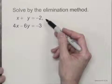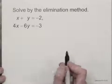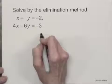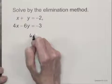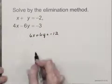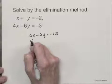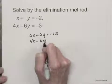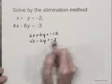If I multiply the first equation by 6, the y terms will add to 0. So let's do that. Multiplying the first equation by 6, we have 6x plus 6y equals negative 12. And the second equation is 4x minus 6y equals negative 3.